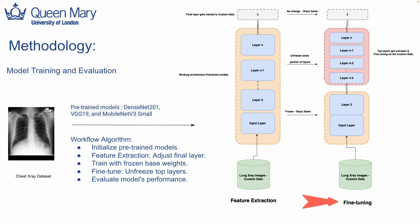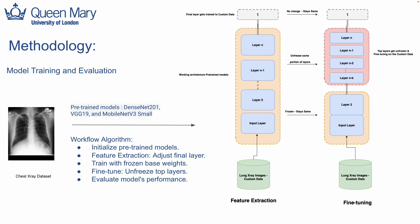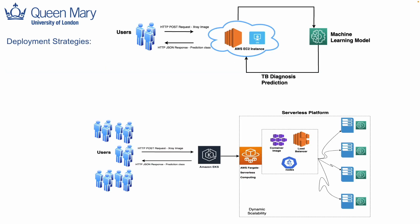The second phase is fine-tuning. Here we unfreeze some top layers of our model and train these layers again, aligning them more closely with our task. We introduce a much slower learning rate of 0.001 to avoid any disruptions in the foundational knowledge of the model. This transfer learning methodology of feature extraction and fine-tuning allows us to train the model with less data and less computational requirement. After selecting our best model, we implement a deployment strategy — we have two deployment approaches: a server-based approach and a serverless approach.